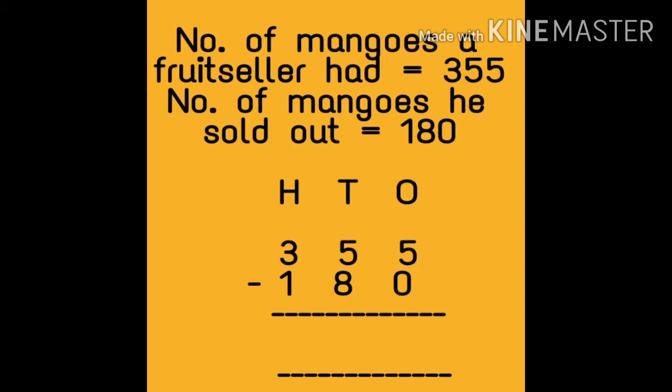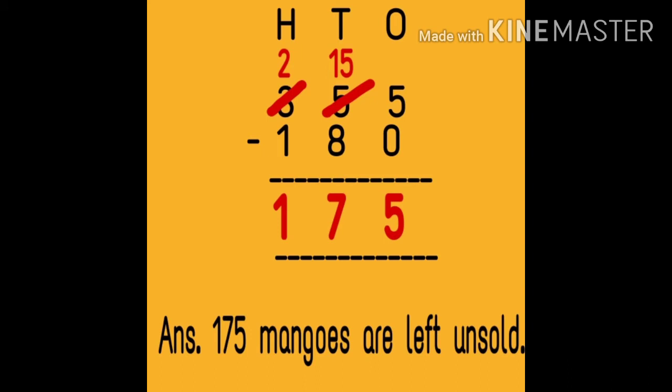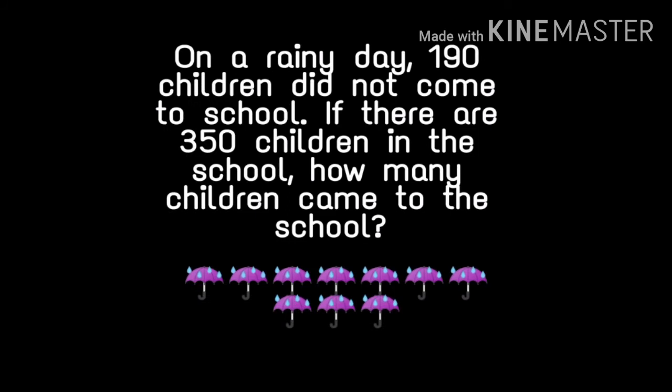We will arrange these numbers under the columns of ones, tens, and hundreds, then start subtracting. Ones digit: five minus zero is equal to five. Tens column: can we subtract eight from five? No. So we take a borrow from the hundreds column — three becomes two, and five becomes fifteen. Fifteen minus eight is equal to seven. Hundreds column: two minus one is equal to one. The difference is 175, so 175 mangoes are left unsold.